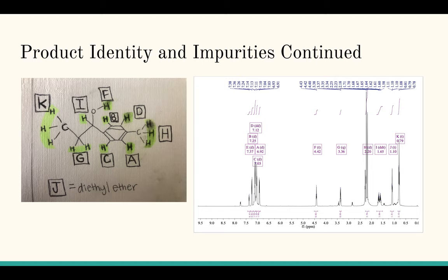The peak J at 1.1 probably was our diethyl ether. So that also looked good. No obvious impurities.